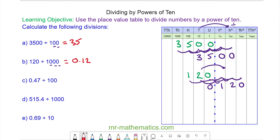Do you want to try and calculate question C, D and E by pausing the video? You can resume it when you're ready. Okay, for question C, we have 0.47. And we're moving it two places to the right because of the two zeros. So we have a 7, 4. Here we have a 0. And here is a placeholder in the tenths column. So we have 0.0047.